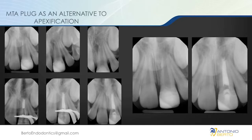Another alternative is doing an MTA plug apexification, where we can in one single visit fill the root canal with MTA. That MTA has been proven to allow growth of cementum around that area, and the studies show up to 95% success. But neither of those two techniques are going to allow us to get any growth in thickness and length on the weak roots.